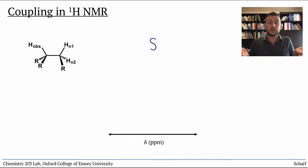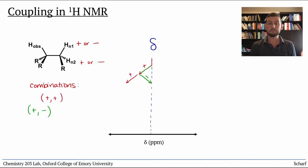What if the observed proton has two identical neighbors? Each of those neighbors could have two possible spin states. The first neighbor can be either spin up or spin down, and the second neighbor could also be spin up or spin down. The possible combinations are plus plus, plus minus, minus plus, and minus minus.